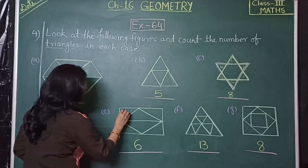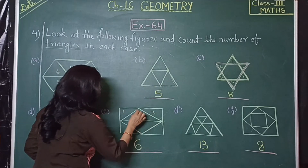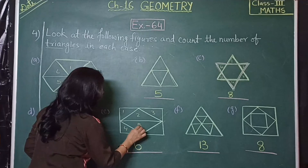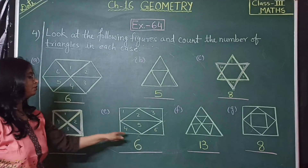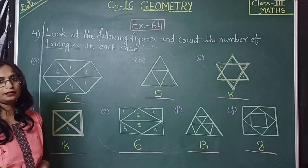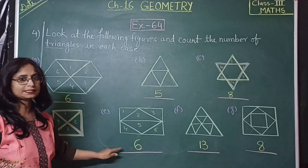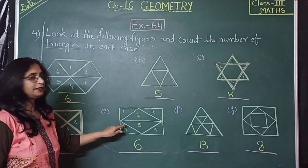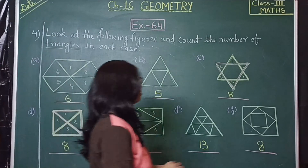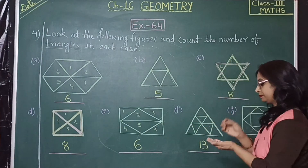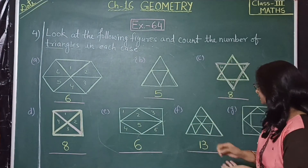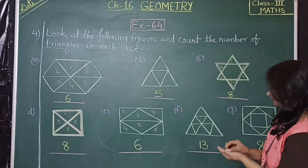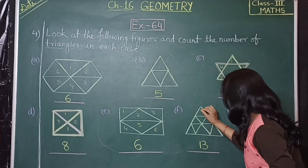The next figure has six triangles: one, two, three, four, five, six. Only six triangles are in this figure. And the following figure has a total of thirteen triangles.